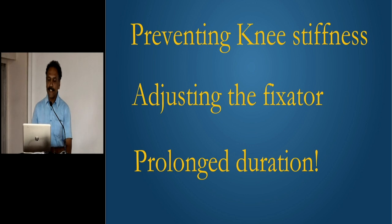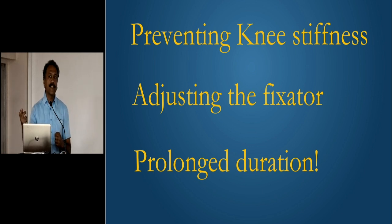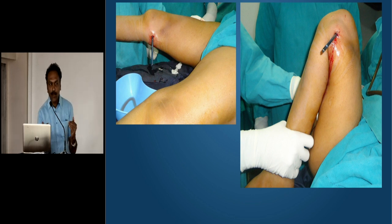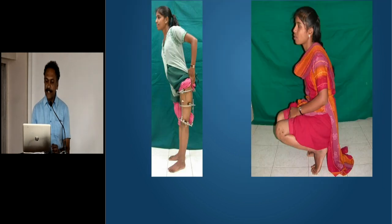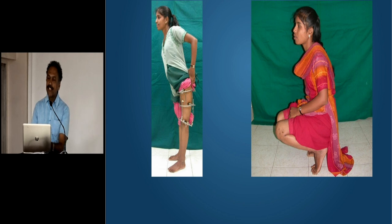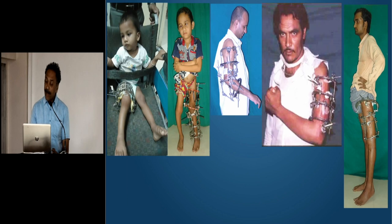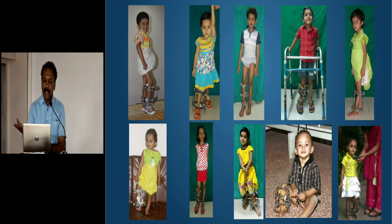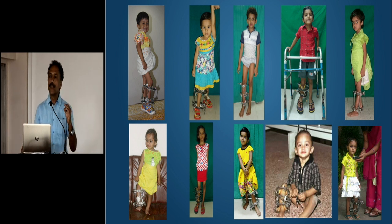We do not have the time, the gumption, the wherewithal, or the inclination to adjust the fixator in the post-op period. We are scared, and so are our patients, of the prolonged duration. But there are answers. You can prevent knee stiffness by passing the pins posterior to the quadriceps and making sure you put the knee through full range of motion on the table. Even with a very low osteotomy which heals in less than two months, with pins which are very close to the knee joint, this lady can have full range of motion.